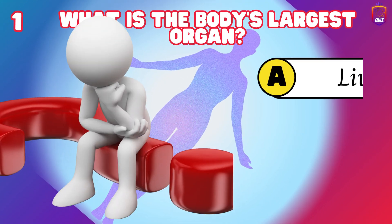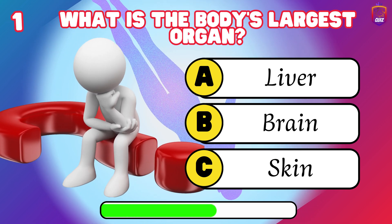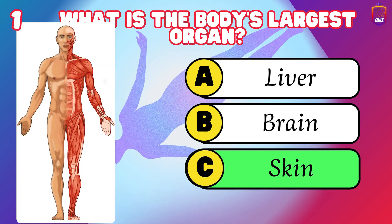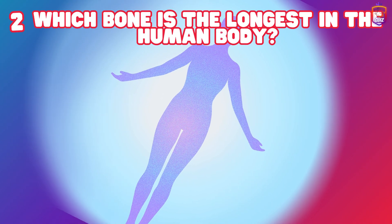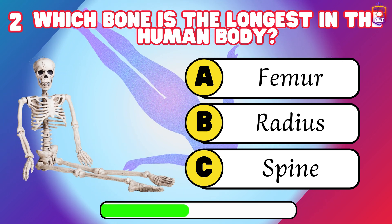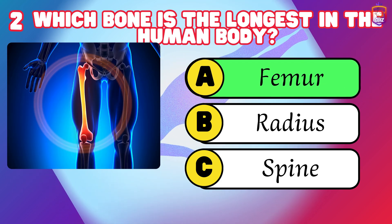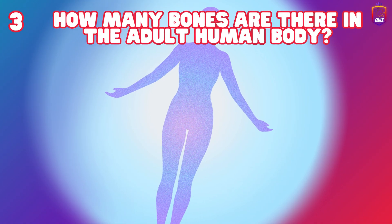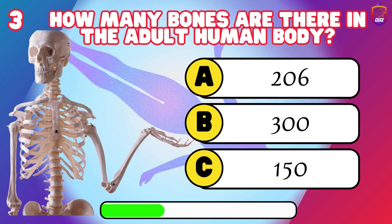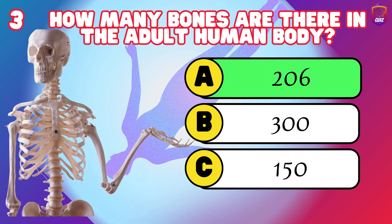What is the body's largest organ? It's skin. Which bone is the longest in the human body? Femur. How many bones are there in the adult human body? 206.